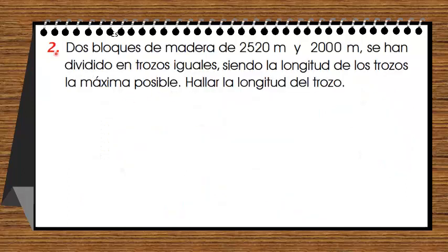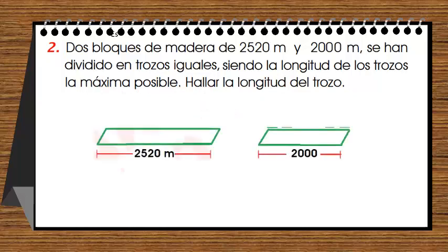Problema aplicativo dos: Dos bloques de madera de dos mil quinientos veinte metros y dos mil metros se han dividido en trozos iguales, siendo la longitud de los trozos la máxima posible. Un bloque mide dos mil quinientos metros y el otro dos mil metros.